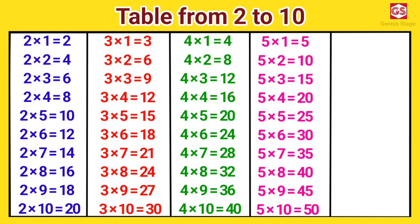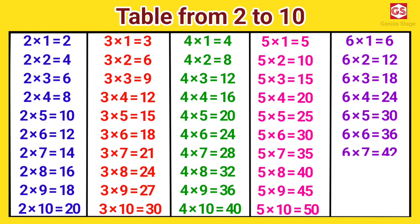5 tens are 50. 6 ones are 6. 6 twos are 12. 6 threes are 18. 6 fours are 24. 6 fives are 30. 6 sixes are 36. 6 sevens are 42. 6 eights are 48. 6 nines are 54